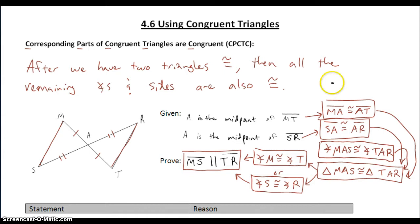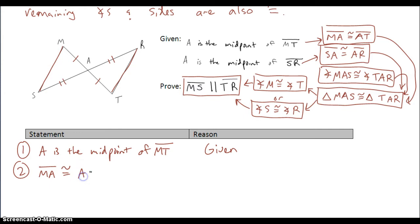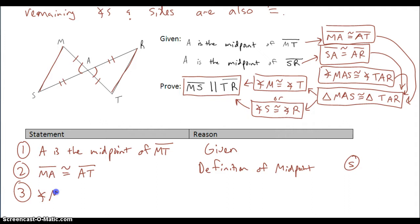There's the flow of the proof — I just need to write it into a two-column proof. Let's start with our first given: A is the midpoint of segment MT. If we know that A is the midpoint, we can conclude that MA is congruent to AT by the definition of midpoint. That gives me my first pair of congruent sides. And since I want to use SAS, I'm going to hop to my angles being congruent: angle MAS is congruent to angle TAR by the vertical angles theorem.